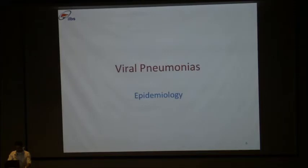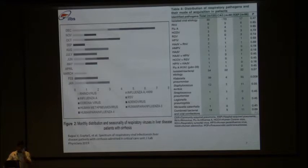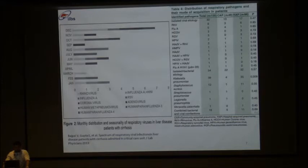Regarding epidemiology, I could find very few studies of pneumonia by viral pathogens in cirrhotic patients. The studies from India are from our institute. This chart shows the monthly distribution of isolated viruses. There is one peak in December, where the most prevalent pathogen was rhinoviruses, followed by influenza and respiratory syncytial viruses. A second peak is noticeable during the monsoon season, that is July and August. The rest of the months — February, March, April, May — show low viral activity.